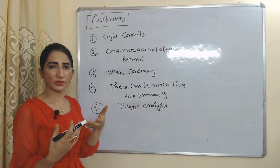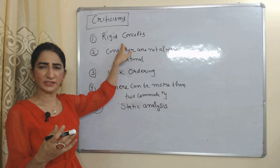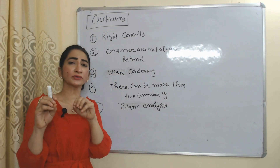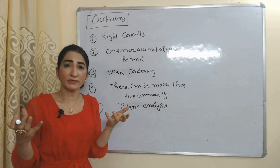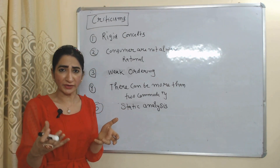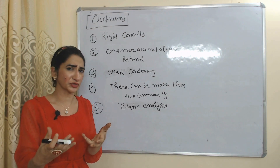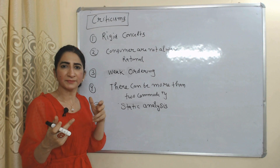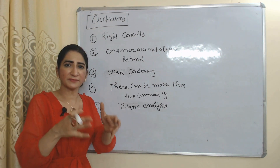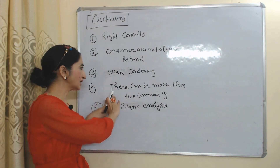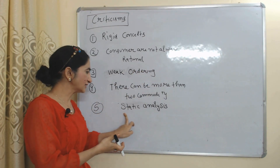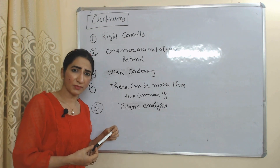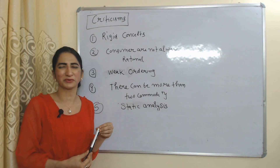According to some economists, this theory is based on a rigid concept and is not applicable in every situation. Consumer are not always rational — sometimes they have limited information, and sometimes their behavior is influenced by emotions and social pressures. This theory mainly uses weak ordering, which doesn't describe a person's specific liking or disliking. The theory is also limited to only two commodities, and only applicable in static analysis — not in dynamic situations. That's all about Hicks' theory. Thank you for watching.